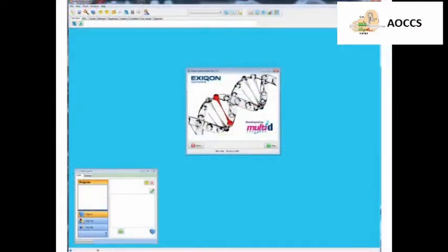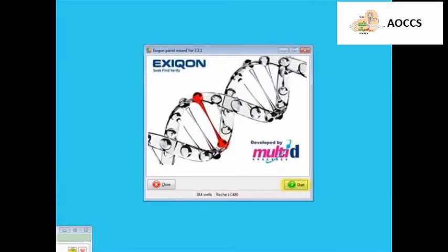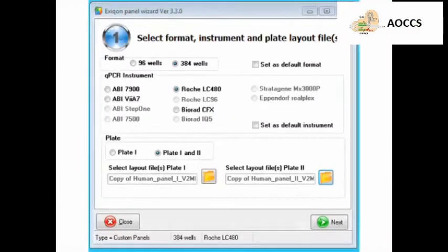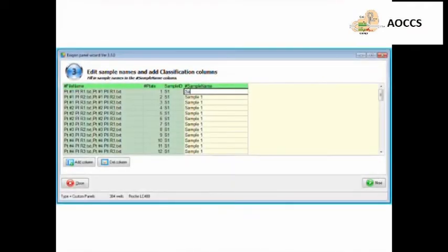Next, import the data into GenX by first clicking on the Exagon Import Wizard button, and then clicking Start. At the next window, select the Format, Instrument, and Plate Layout files. Plate Layout Excel files can be downloaded from the Exagon website. Then, import Panel 1, and click Next.